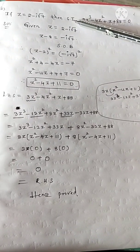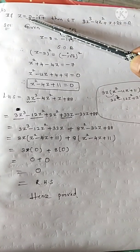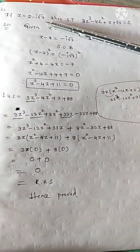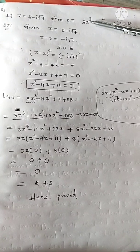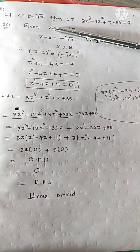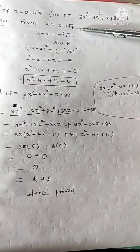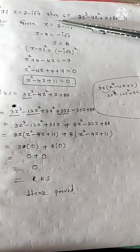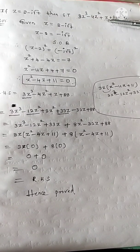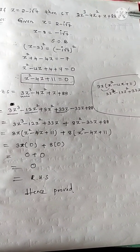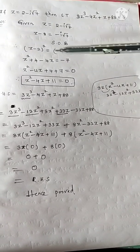I think there are two ways of solutions. Method number 1: z equal to 2 minus i root 7. Find z square and z cube directly — z square is found directly, z cube using the a minus b whole cube formula. Simplify all values, substitute into the LHS, and finally get RHS equal to 0. This is a bit of a tip.